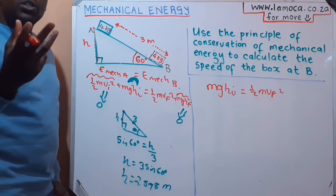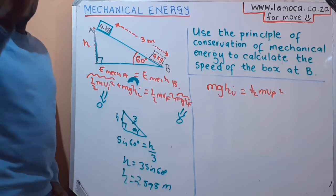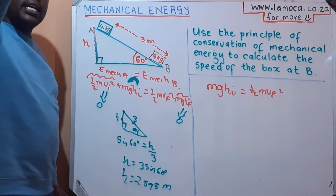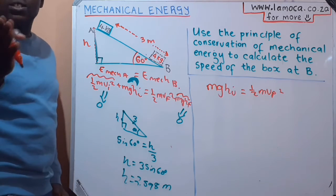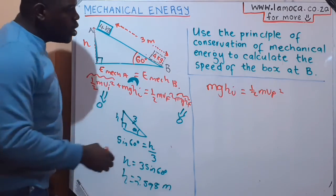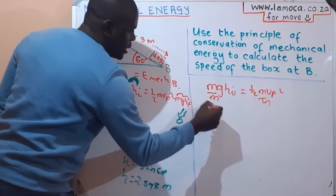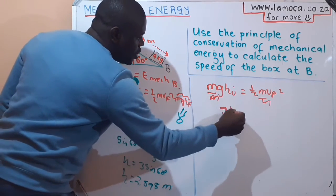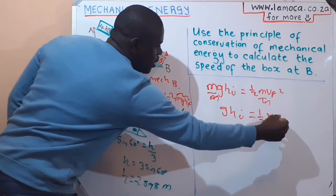When you look at freefall, we don't depend on the mass of the object. Anything that is in freefall, if it's dropped from the same height and reaches the ground, it's going to reach the ground with the same velocity, regardless of how big it is or how small it is. We can just divide both sides by the mass because it's a common mass, which gives us gh_i = ½v_f².